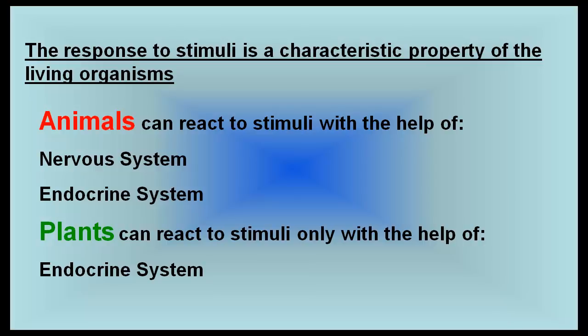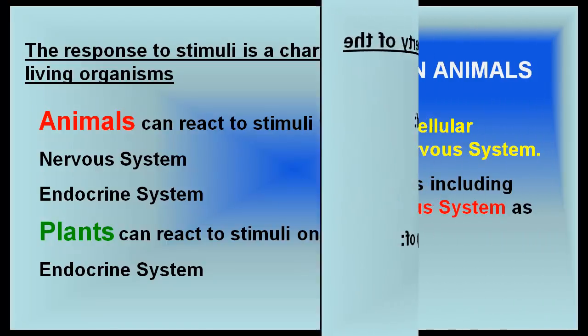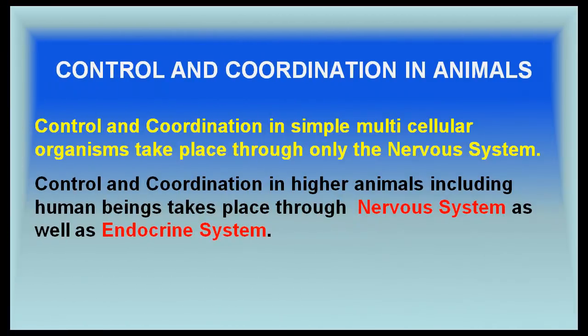Animals can react to stimuli with the help of the nervous system and endocrine system. Plants can react to stimuli only with the help of the endocrine system. Control and coordination in simple multicellular organisms takes place through only the nervous system, while in higher animals including human beings it takes place through both the nervous system and the endocrine system.